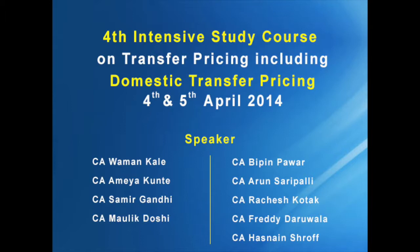Or if there is a specified domestic transaction between two related parties, then transfer pricing provisions become applicable. Domestic transfer pricing was introduced somewhere in 2012. The entire transfer pricing revolves around transactions between associated enterprises or related parties, be it domestic or cross-border. Essentially, there are three pillars in transfer pricing: one is the arm's length price, the second part is the documentation, and the third part — unique to India — is the accountant's report in Form 3CEB.